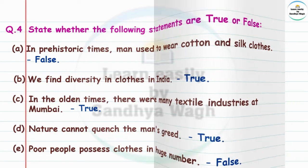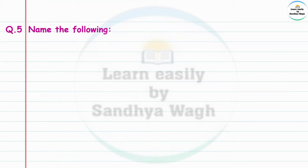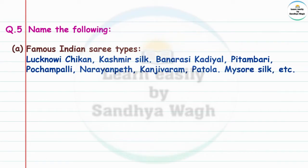Poor people possess clothes in huge numbers — this statement is absolutely wrong, false. Question 5: Name the following. Famous Indian sari types: Lakhnavi Chikan, Kashmir Silk, Banarsi, Kadiyal, Pitambari, Pochampalli, Narayan Peth, Kanjivaram, Patola, Mysur Silk, etc.